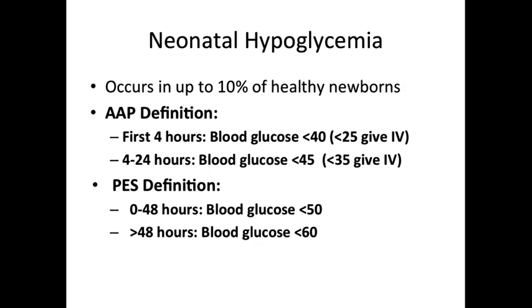We will be focusing on the AAP definition in this lecture, but it is important to realize that generally after 48 hours after birth, blood glucose should be greater than 60 as defined by the Pediatric Endocrine Society.